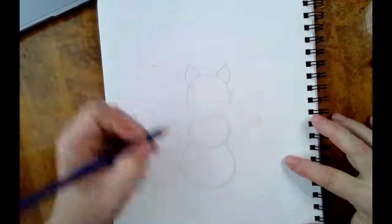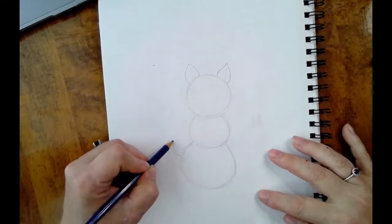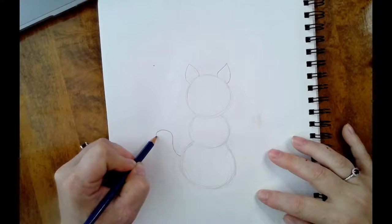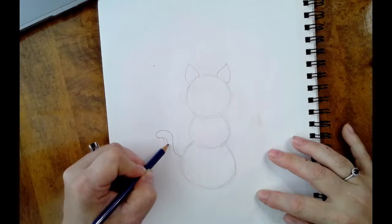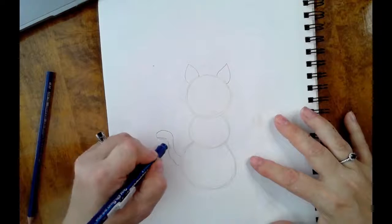Then you can come down here and add a kitty tail. Now kitty tails are kind of rounded, so they have kind of a rounded edge, and then you're going to close it off like that.